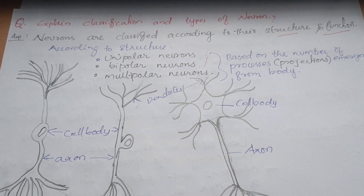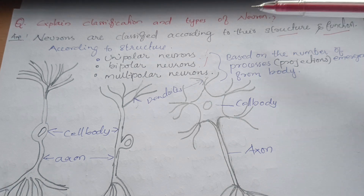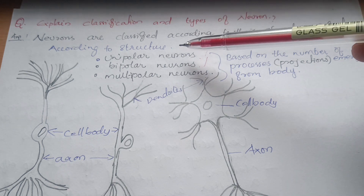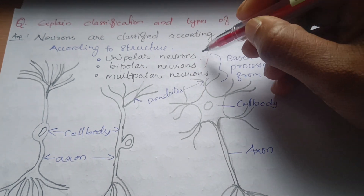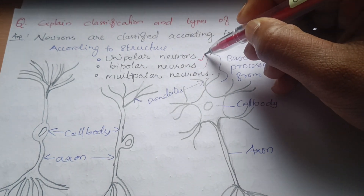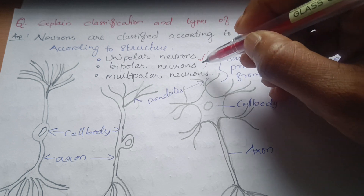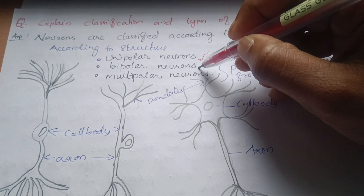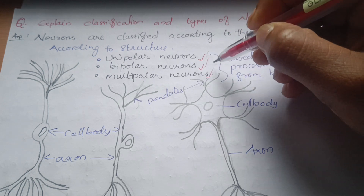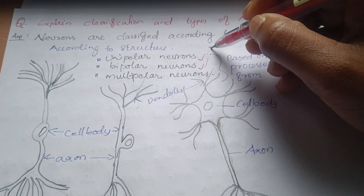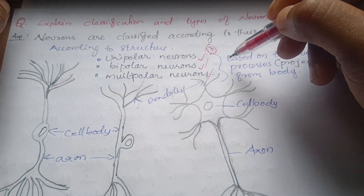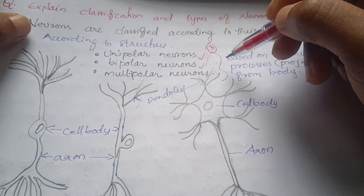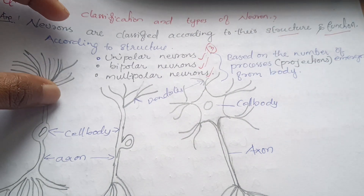We are going to classify neurons according to their structure. According to the structure, there are three types: Unipolar Neuron, Bipolar Neuron, and Multipolar Neuron.